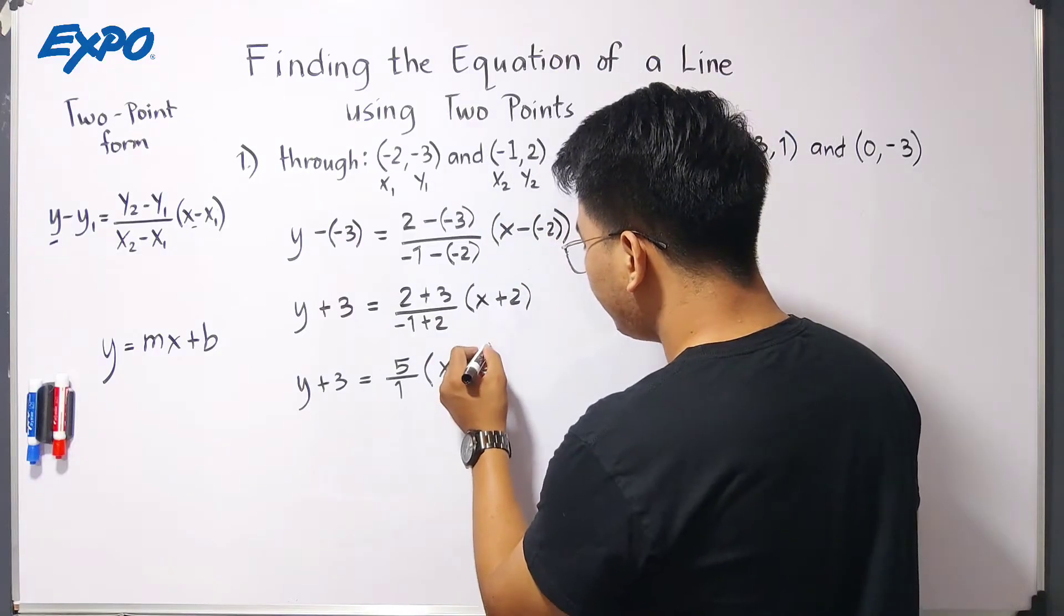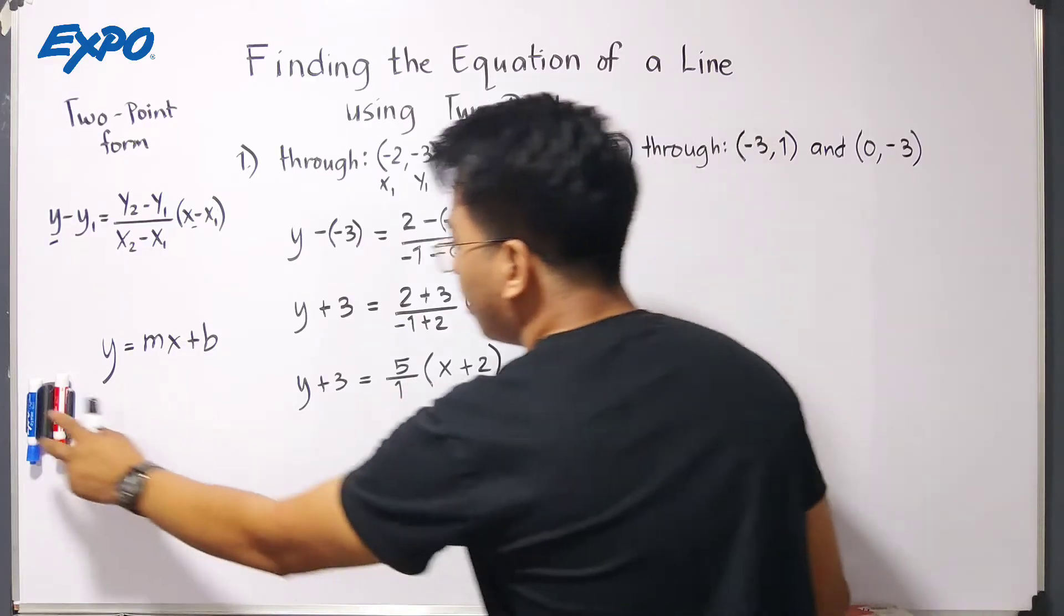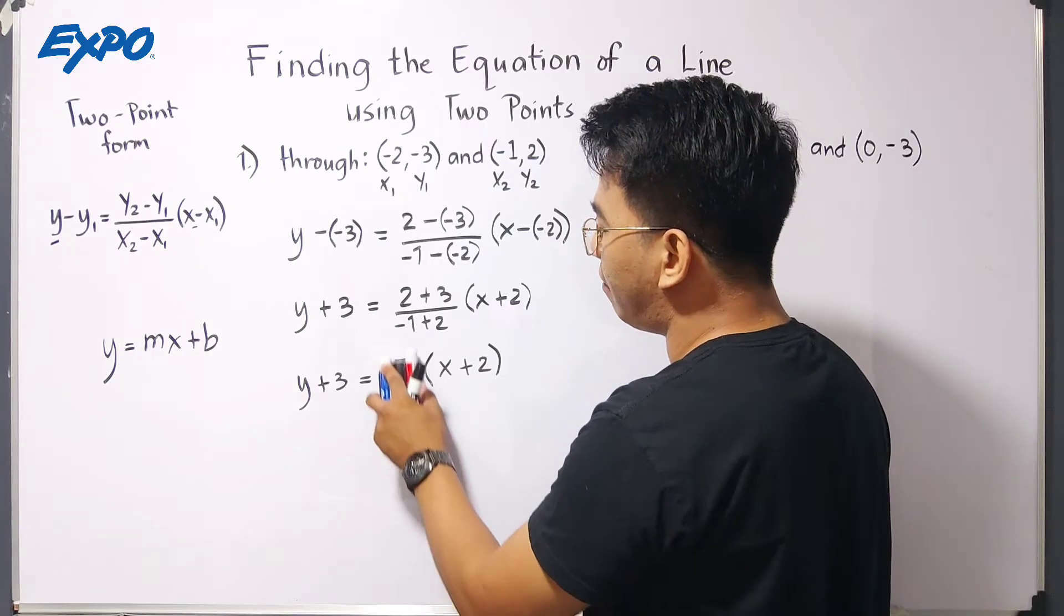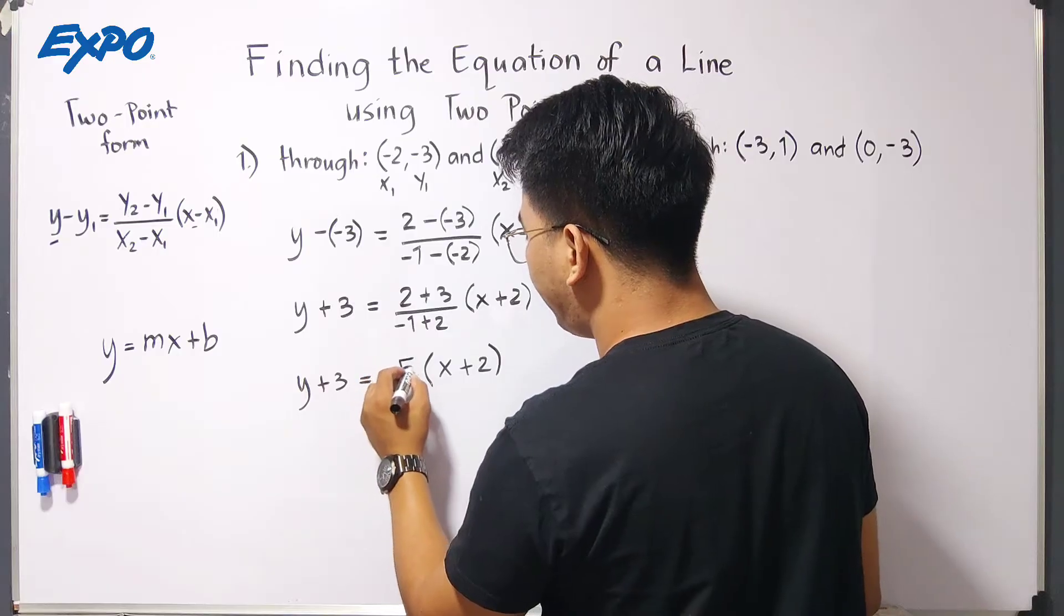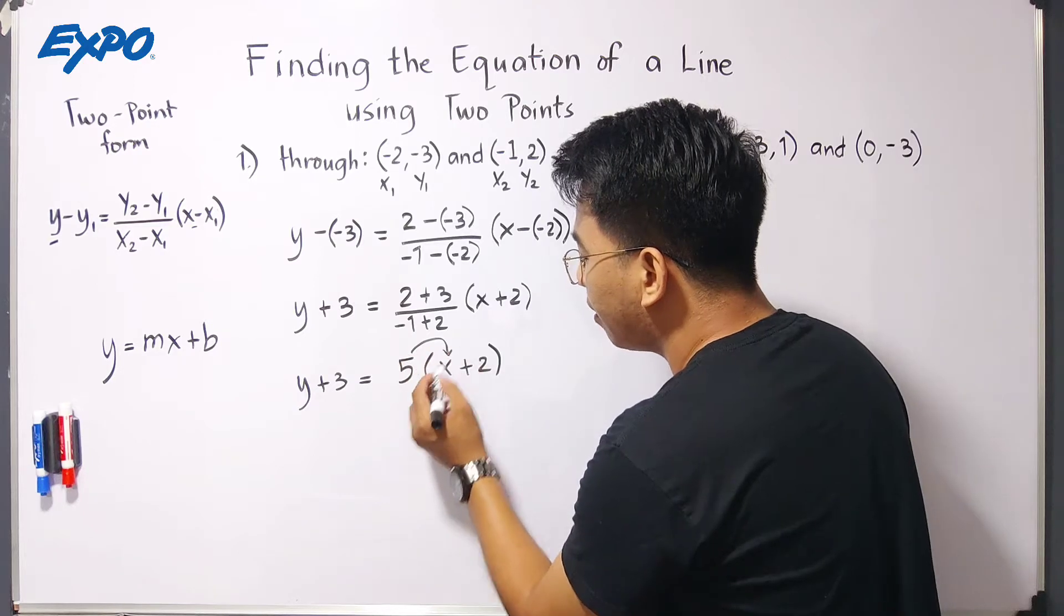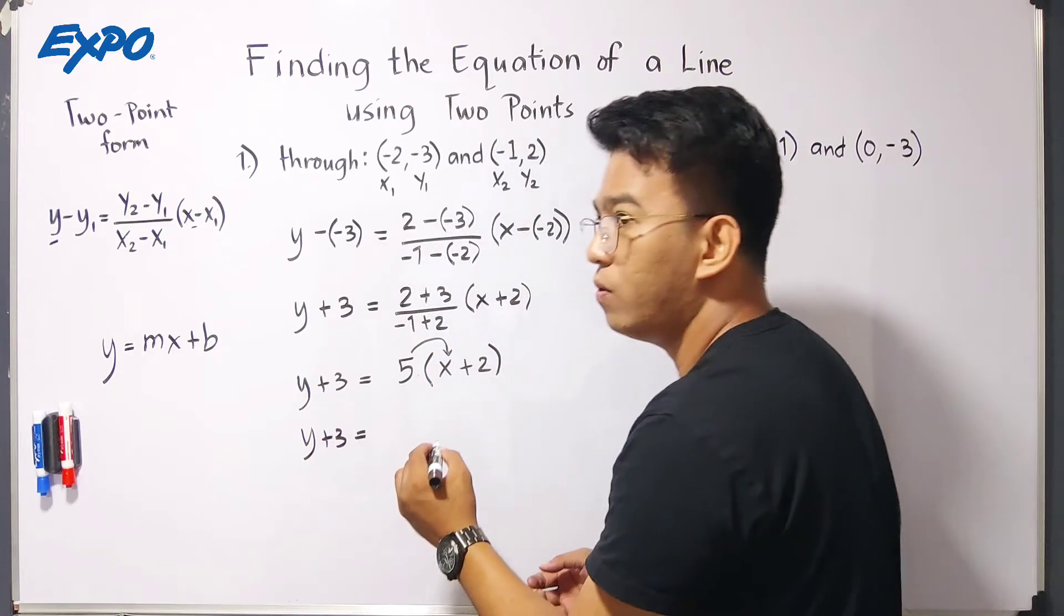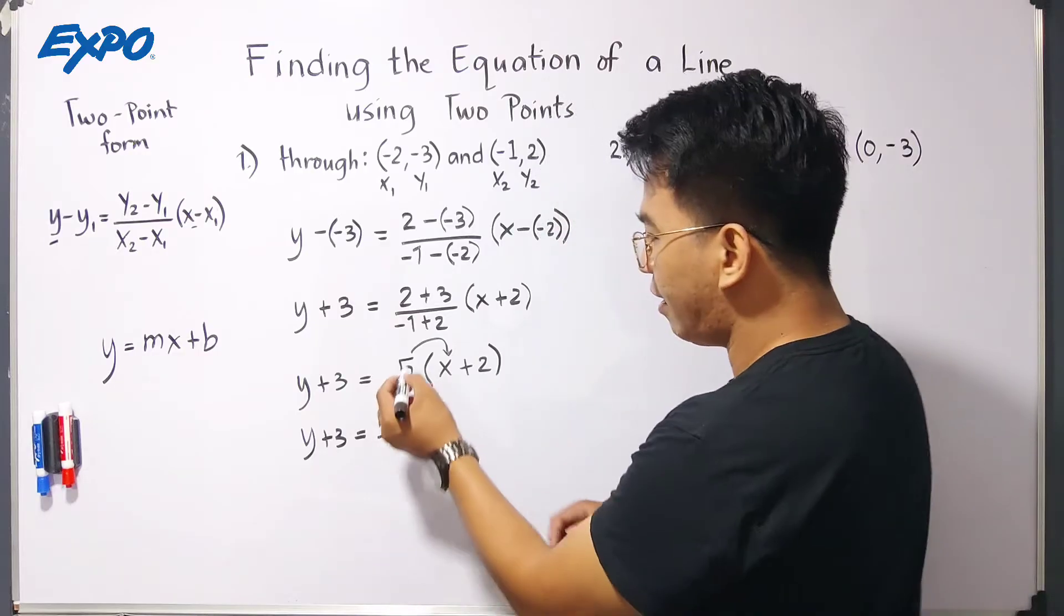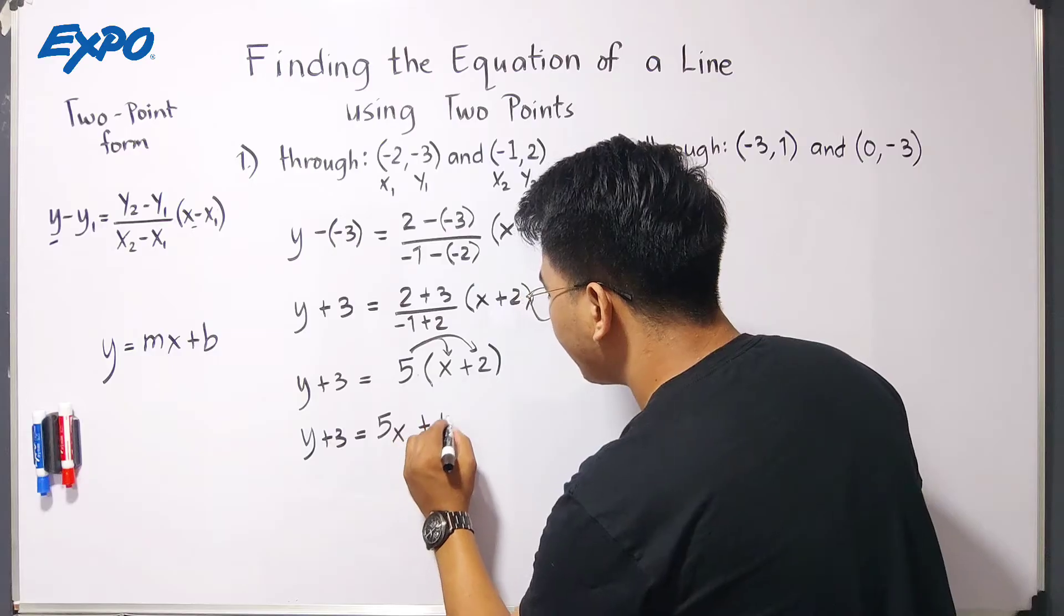What we need to do is that we will simplify this. Your 5 over 1, guys, don't be confused. Your 5 over 1 will become 5 because that is 5 divided by 1. So, what we need here is to use distributive property to multiply it. You have y plus 3 equals 5 times x, that is 5x. Then, another 5 times 2, that is equal to plus 10.